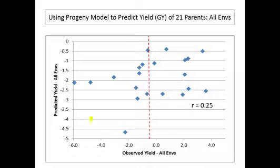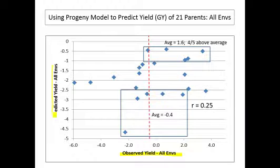We also looked at average yield over all test environments, not just Worcester, Ohio. Here is the observed yield of the 21 parents and their predicted yield based on models from their progeny. The correlation is not as good here — only 0.25 — but if we select the five best, their average yield is 1.6 above average, with four out of five selected lines above average. The five lines with the lowest predicted values performed below average. Again, genomic selection seems able to predict to some degree which lines might be best.